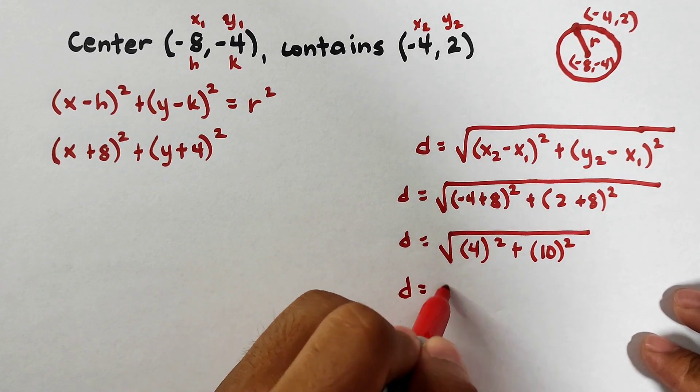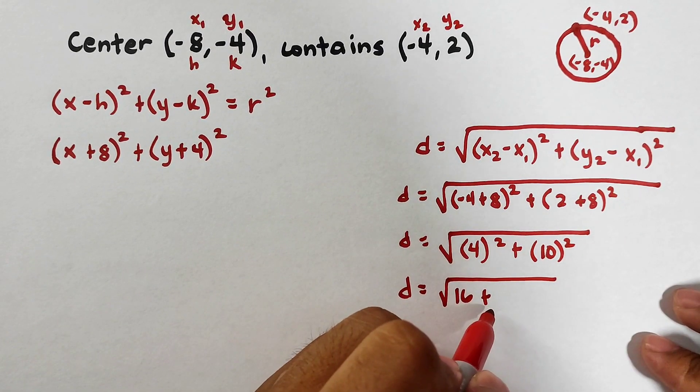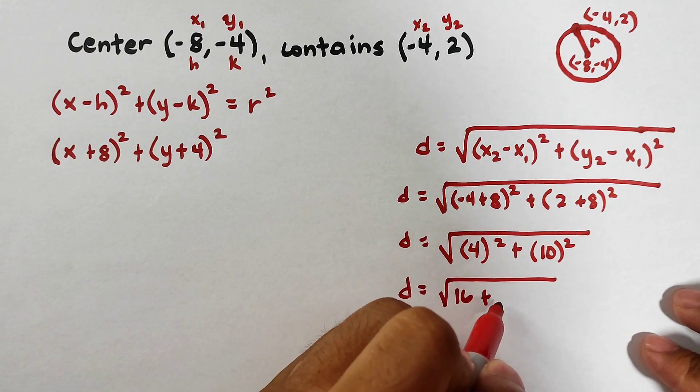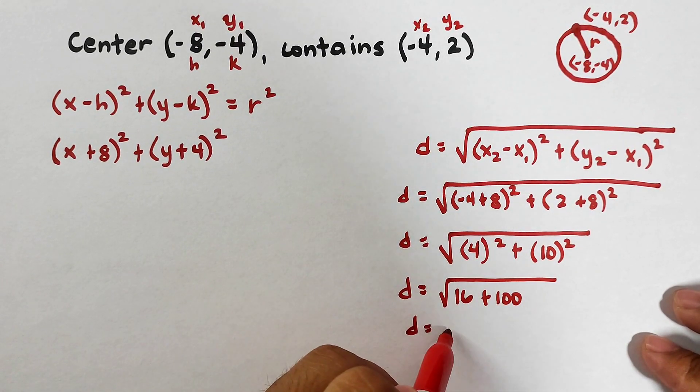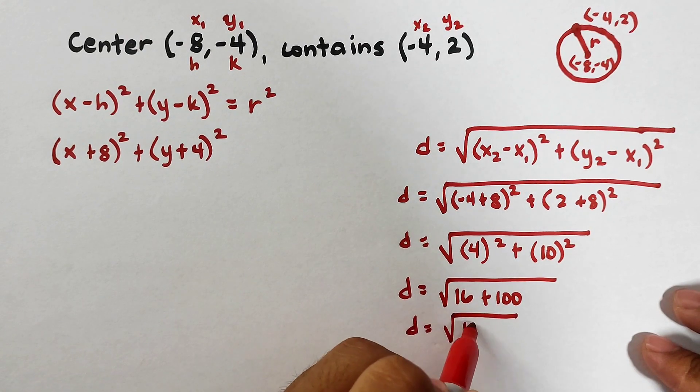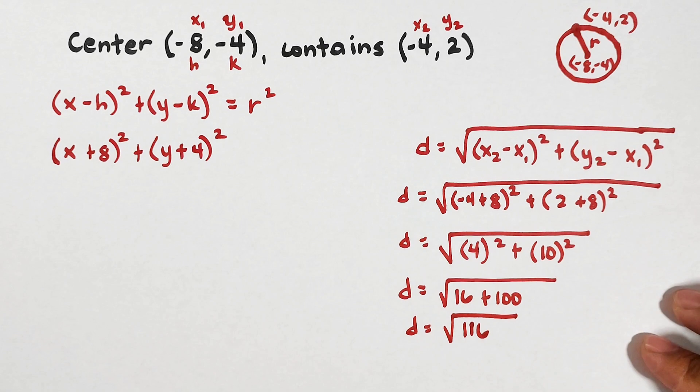Simplify, this is 16 plus 100. So d is equal to square root of 116. Square root of 116.